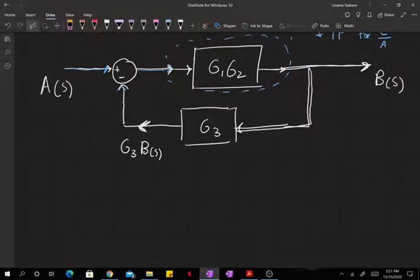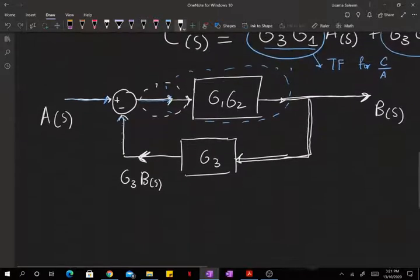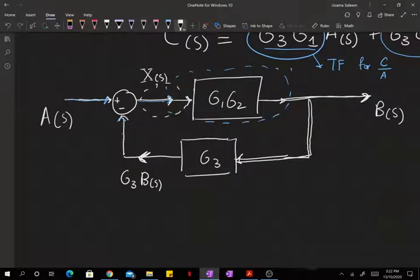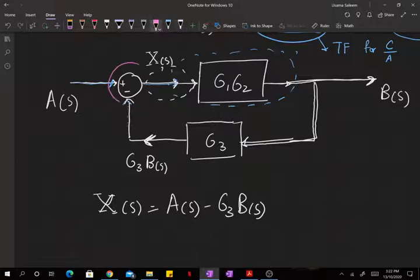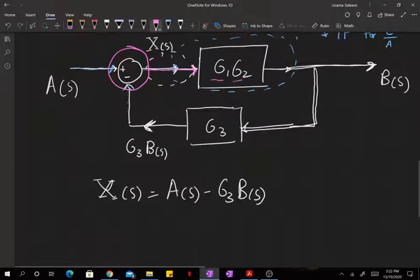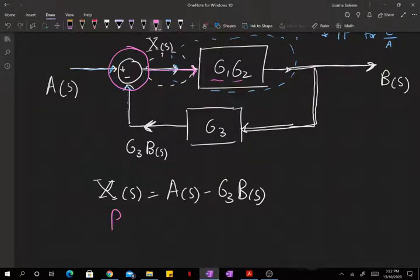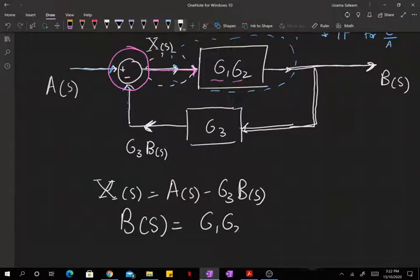Now let's follow along. What's happening here? Let me call that x. And x of s is just the difference between a of s minus g3 b of s, as you can see the block right here. And x goes in, gets multiplied by g1 times g2, and b comes out. So b of s is just equal to g1 times g2 multiplied by a of s minus g3 b of s.